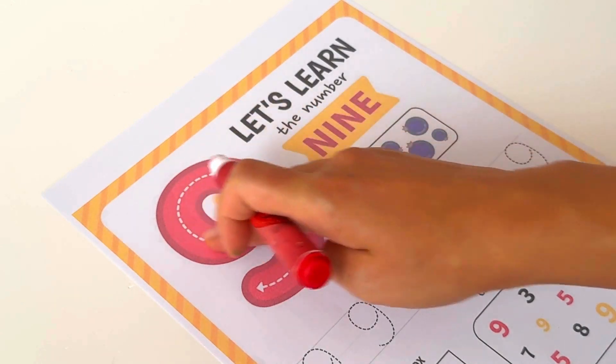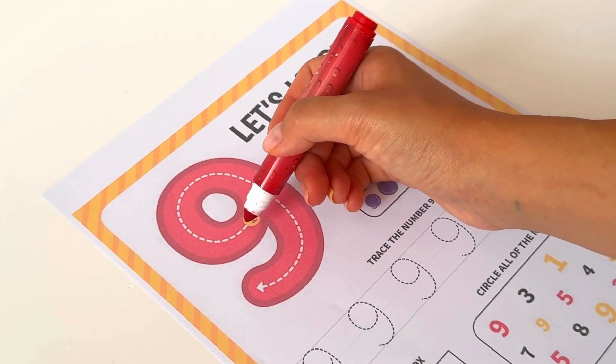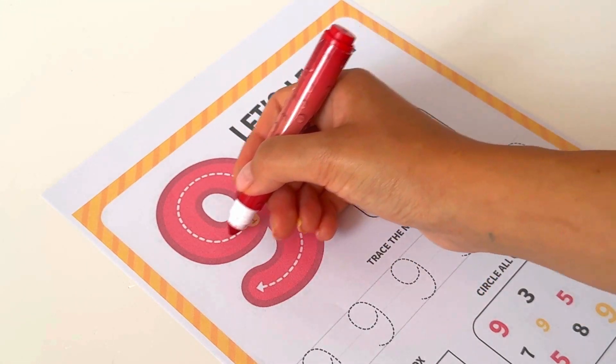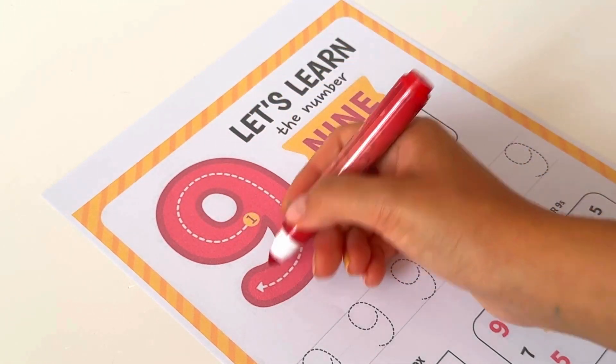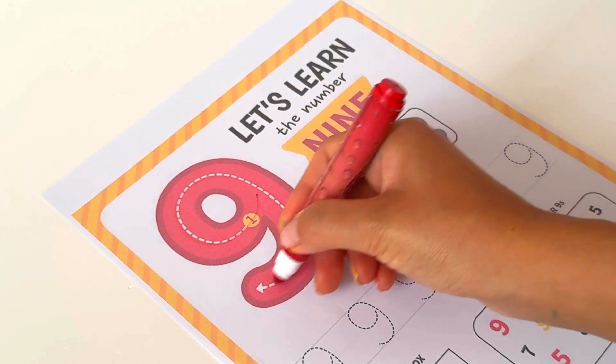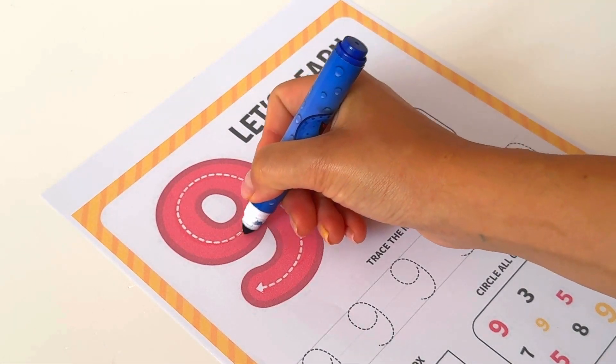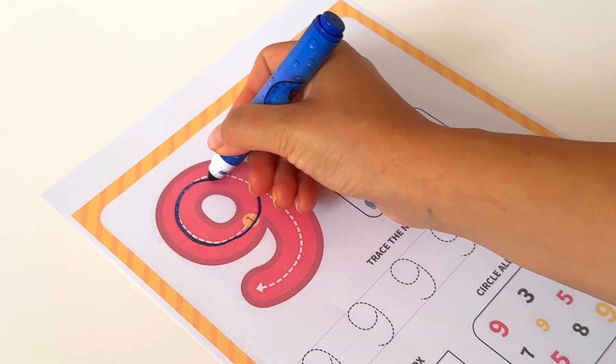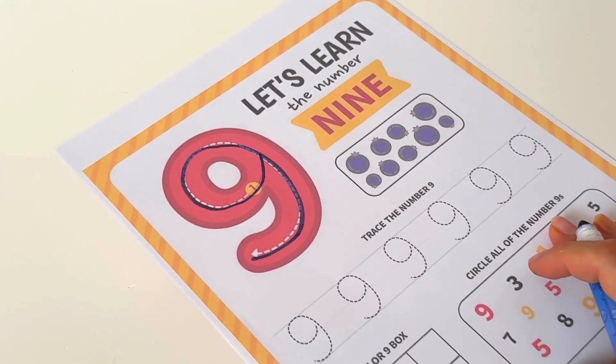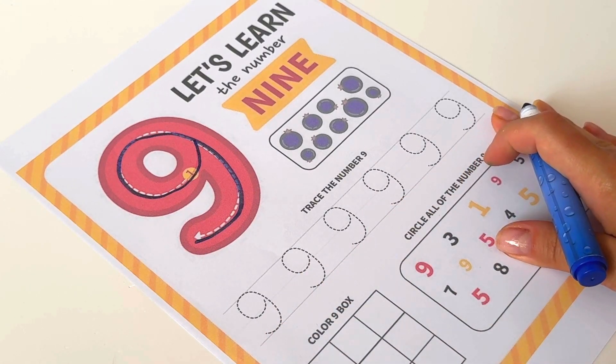So we have to come from number one and make it like here, make a circle, and then we have to go down. It's not very hard. Now let's keep practicing here, tracing the number nine.